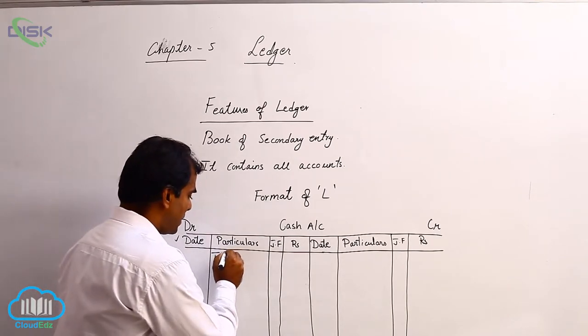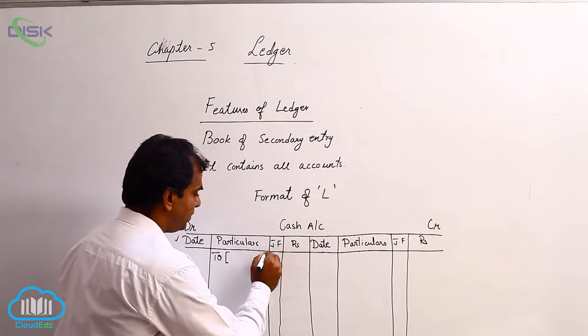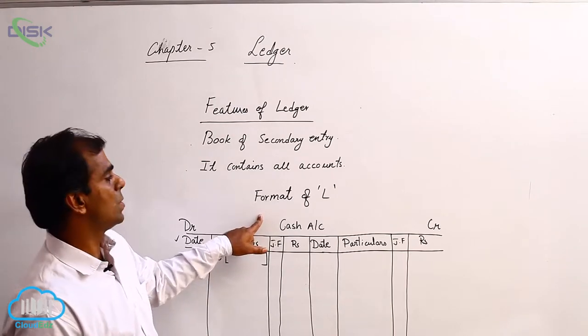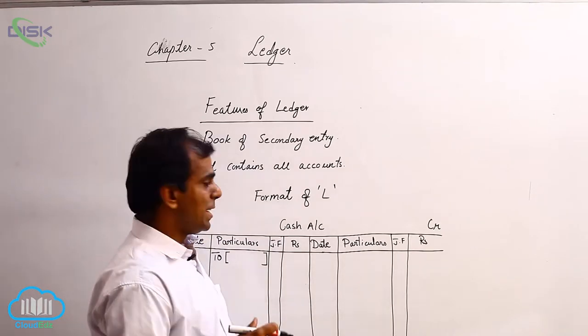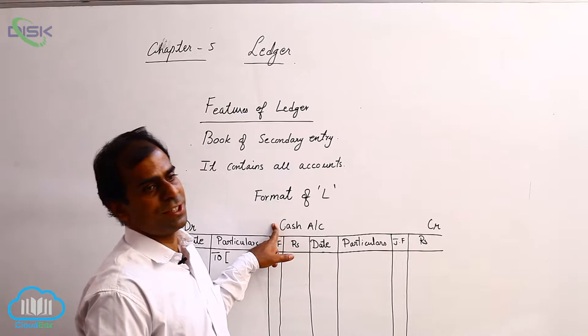After this 'to', for example, I am taking this as a cash account. So, in a journal entry, if cash account was in the debit part of the journal entry,